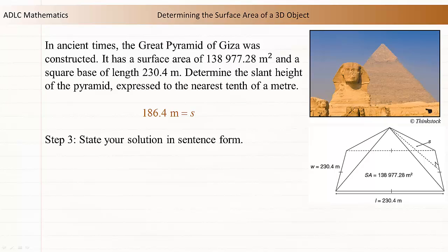Step 3: State your solution in sentence form. The slant height of the Giza pyramid is 186.4 m.